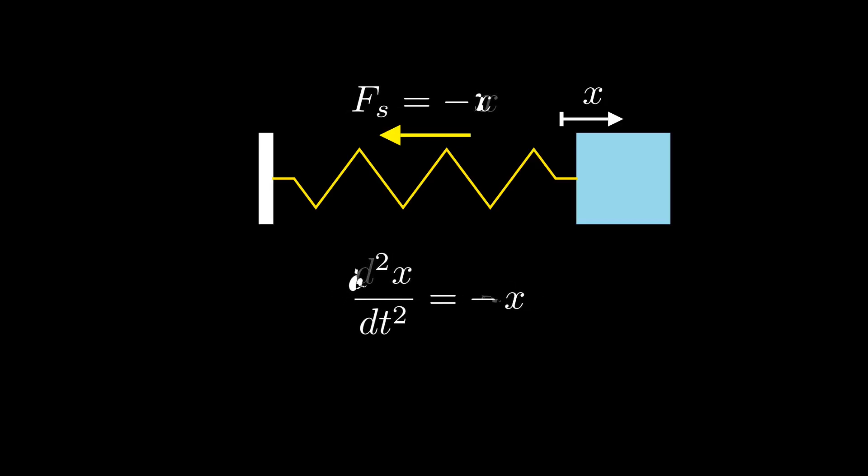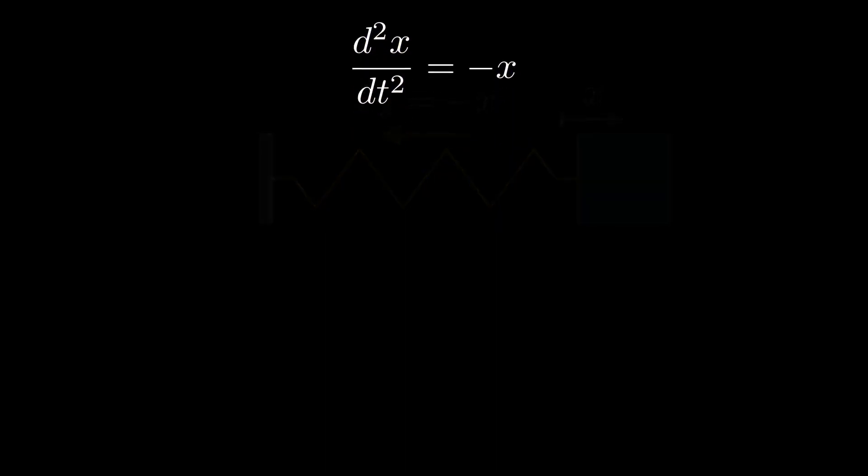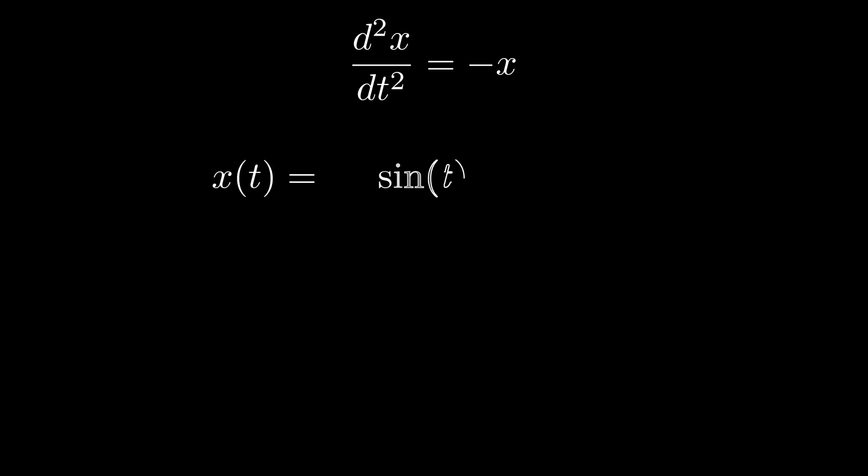For simplicity, let's assume that the mass and the stiffness of spring are equal to 1. If you have seen this equation, you might recall that its solution is always presented as a sum of sin and cos and both the terms are multiplied by constants, let's call them c1 and c2.